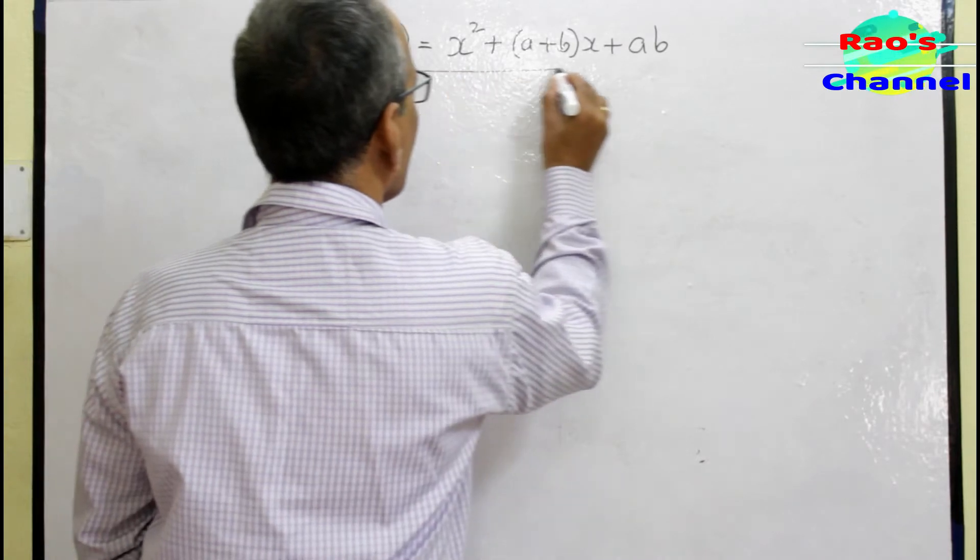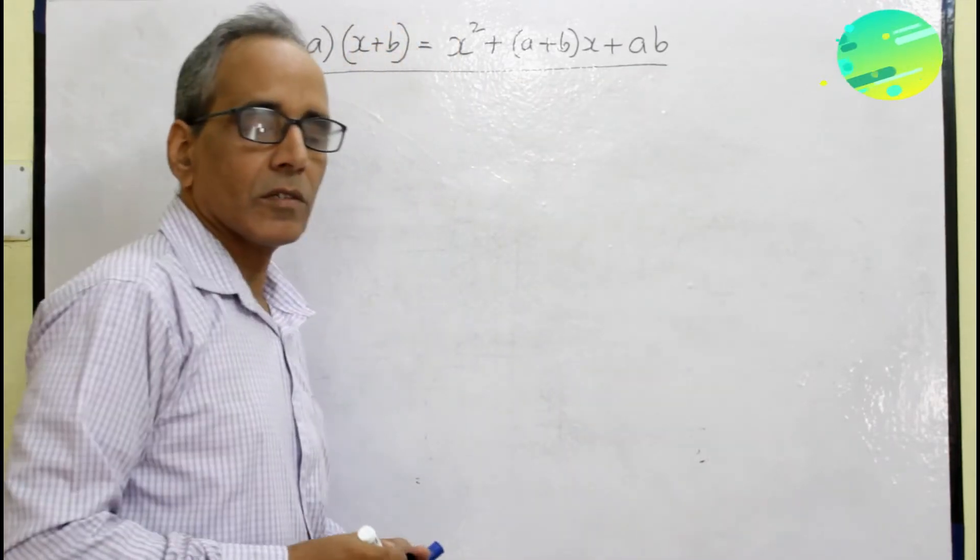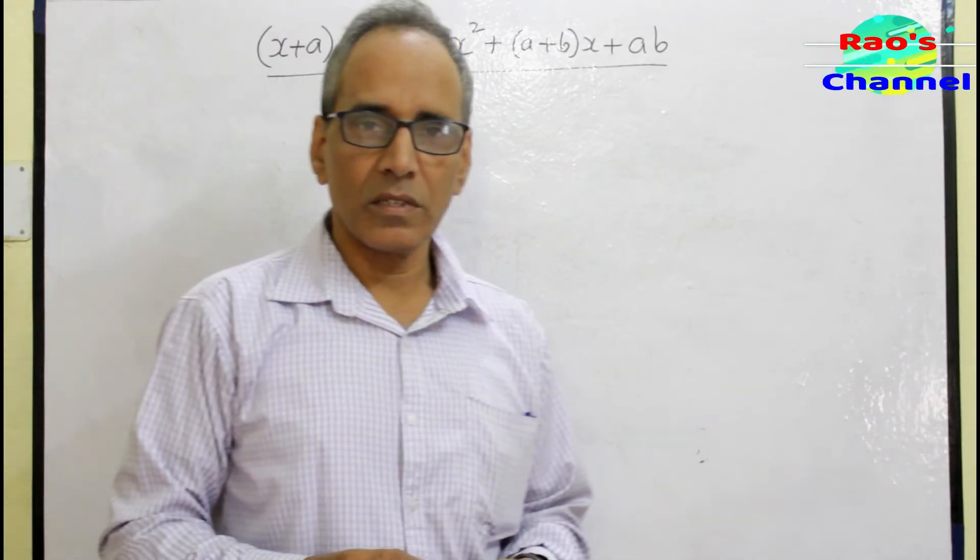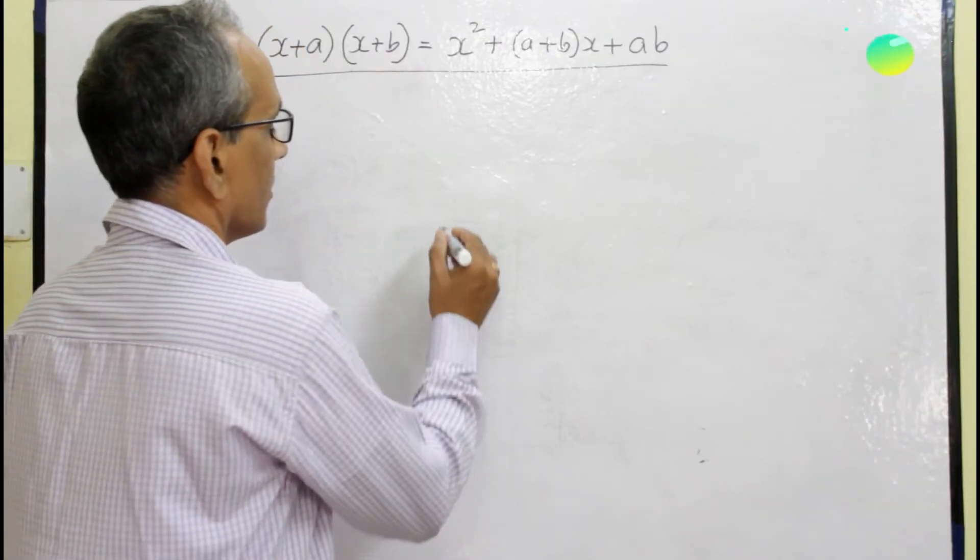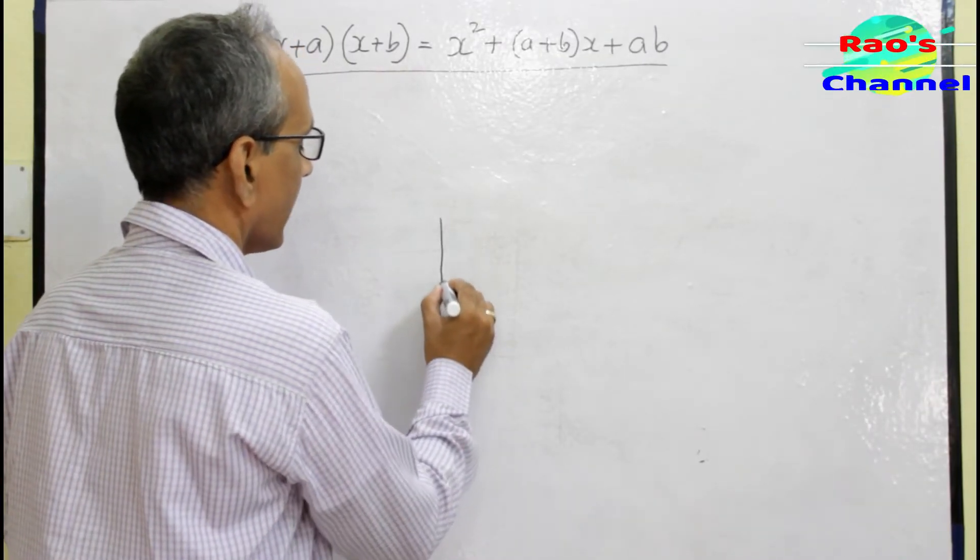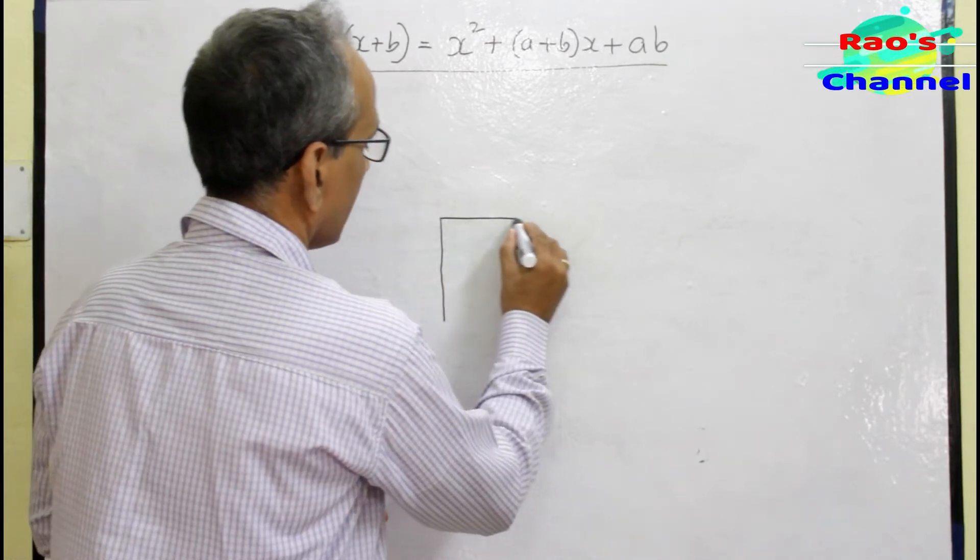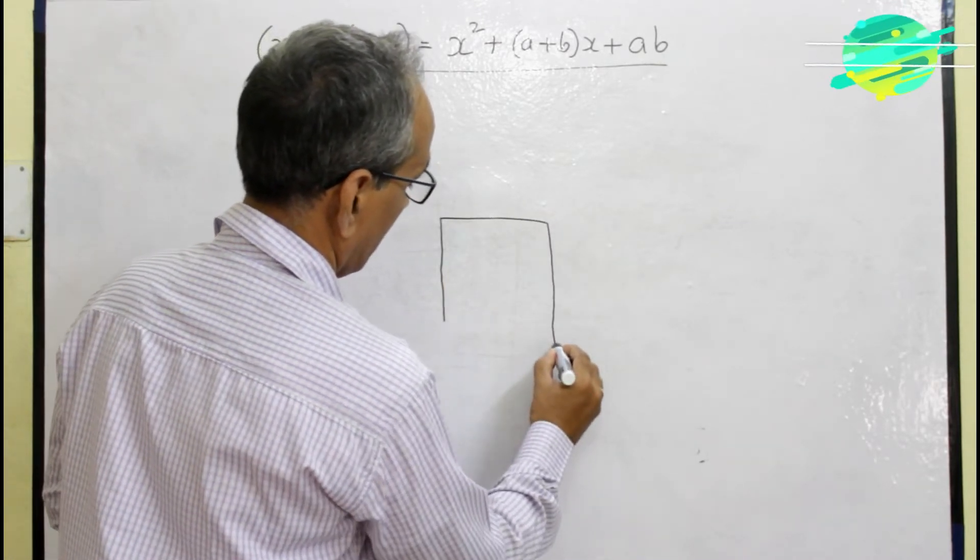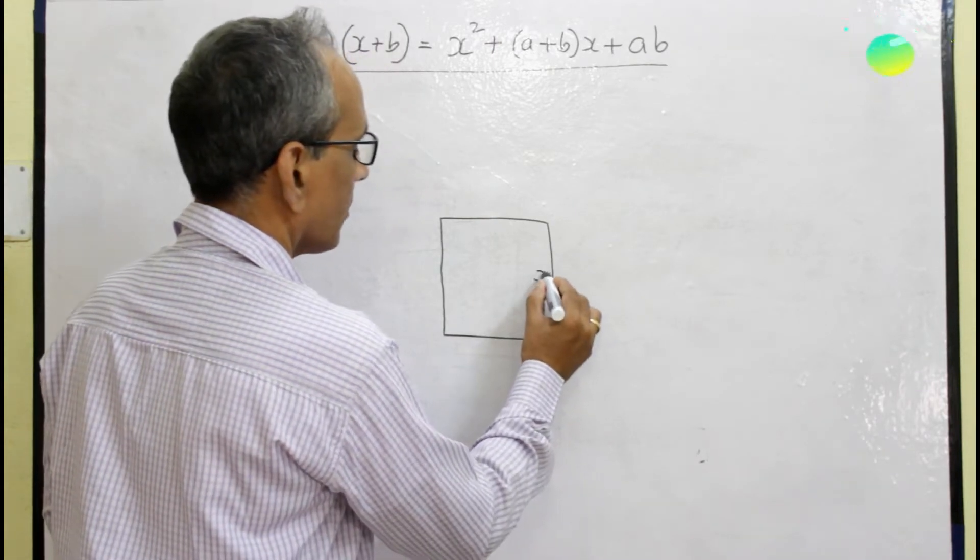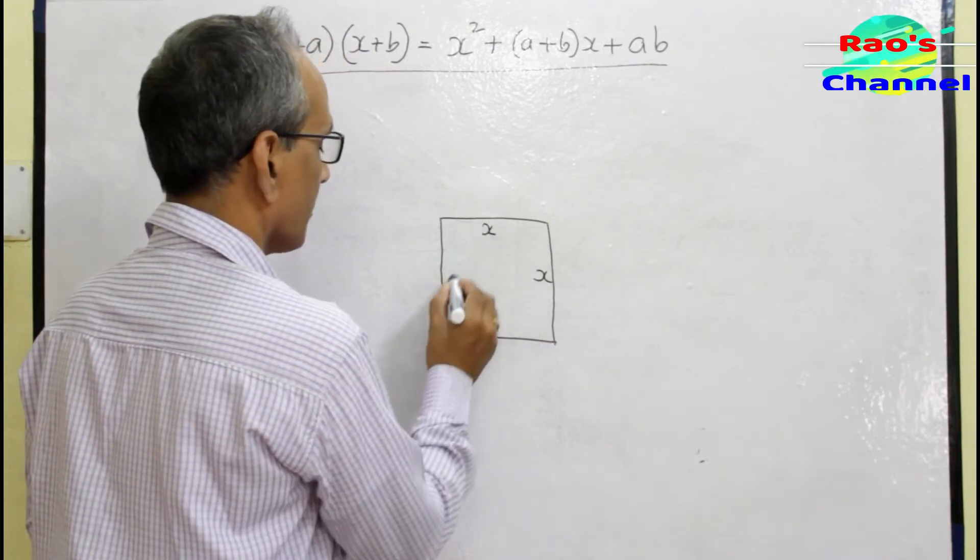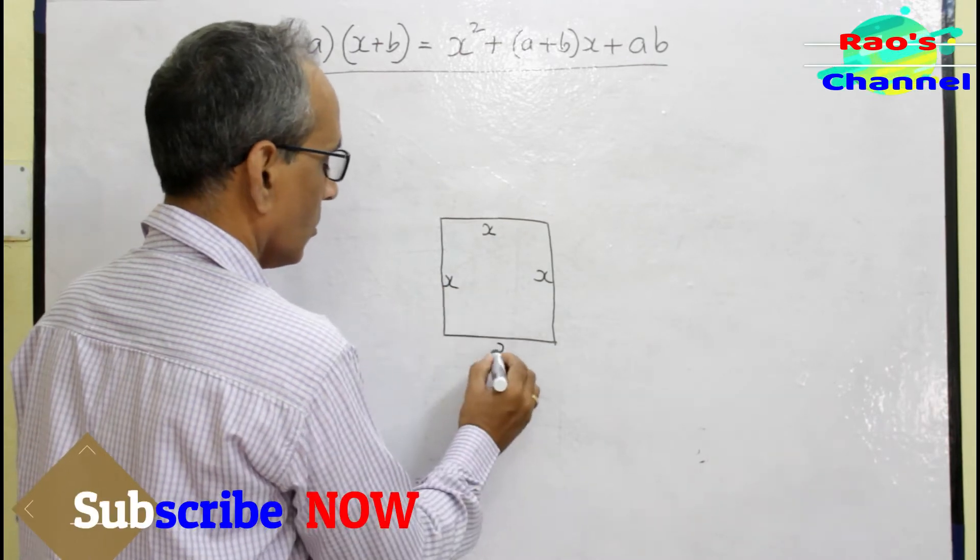Let's see how that identity is derived through a geometrical figure. Here is the figure. First I draw a square of side x units, so obviously its area is x² - side into side, that is x into x.